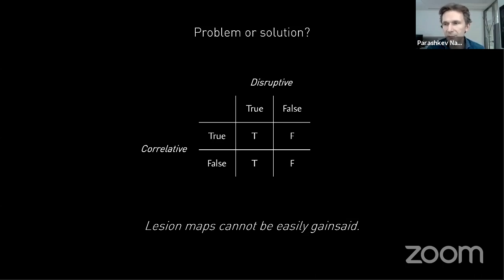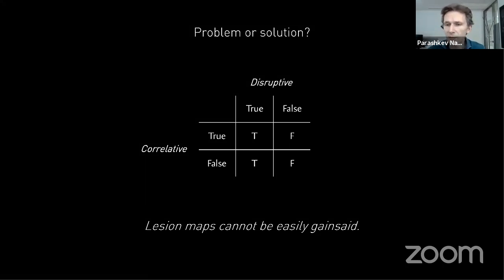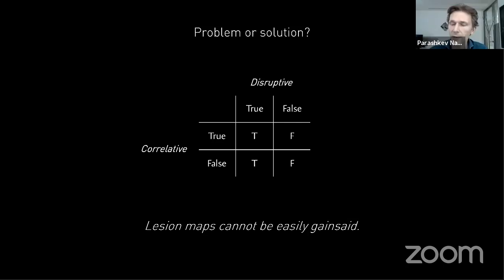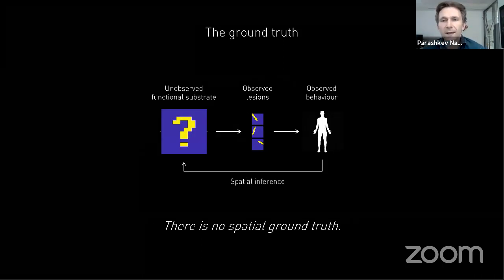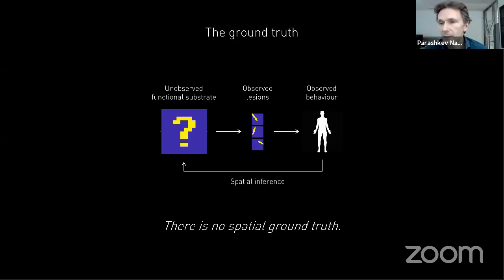This means that lesion maps cannot easily be contradicted — if a lesion map says this area is necessary, it would be natural to conclude that it overrides anything ascertainable by a correlative method. It is very hard for anyone to contradict a lesion map because there isn't really any better model. So if we're correct, that's great; but if we get it wrong, we have very little opportunity to change our position. We have to think very carefully about the method itself because methodological problems may obscure what is really going on.